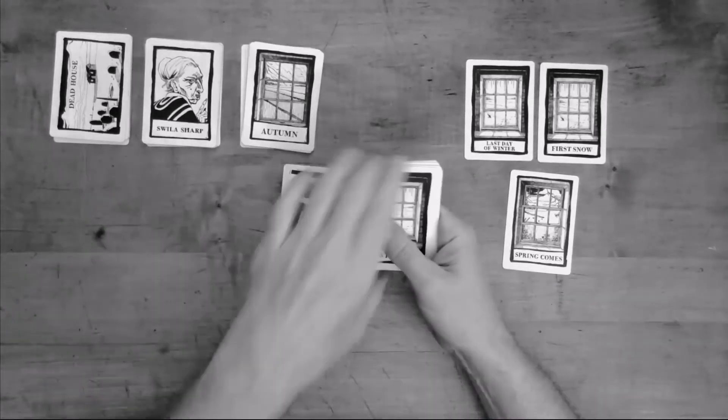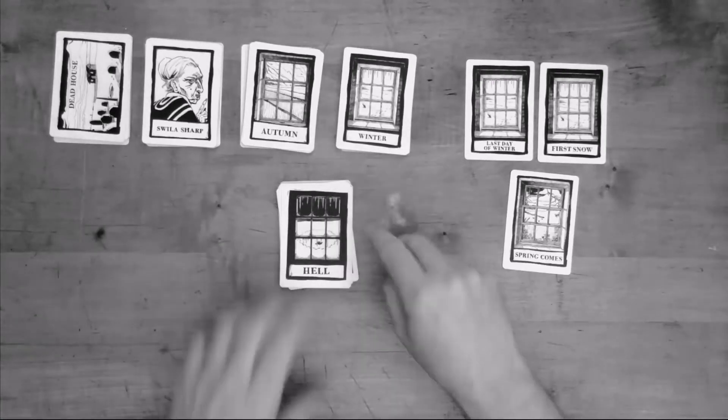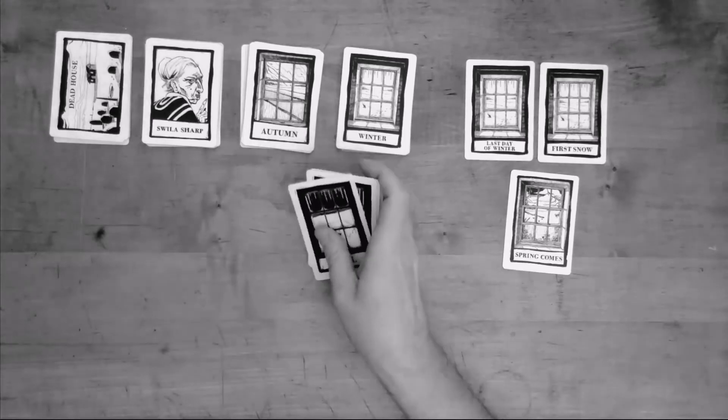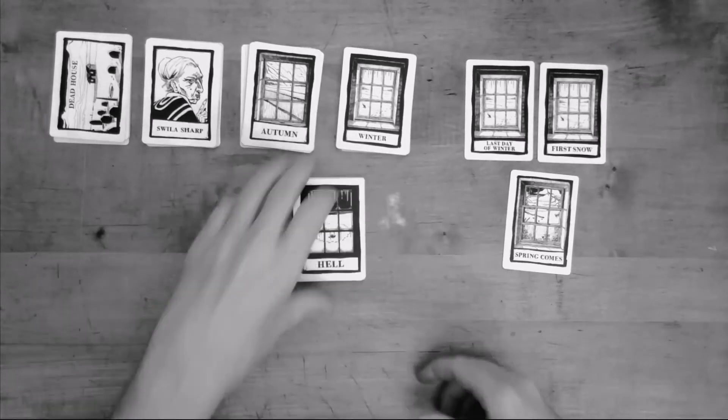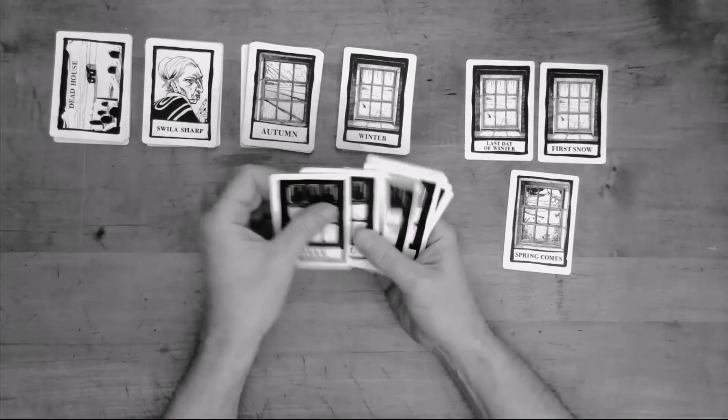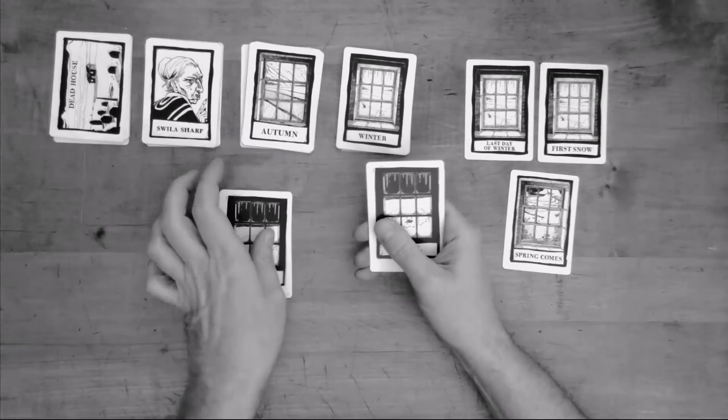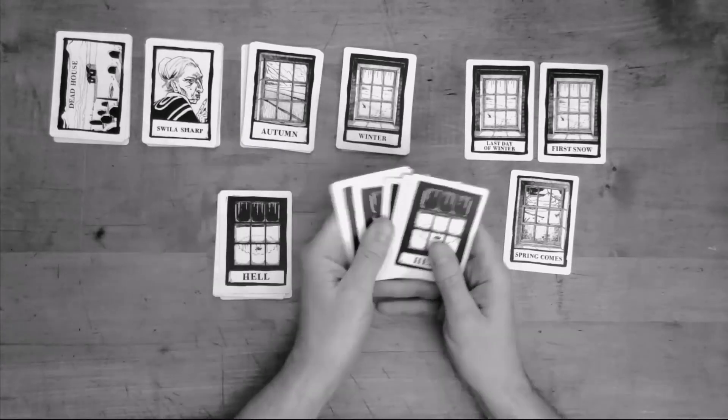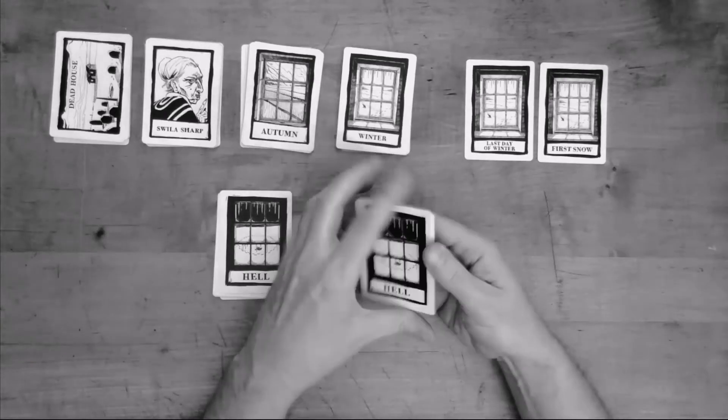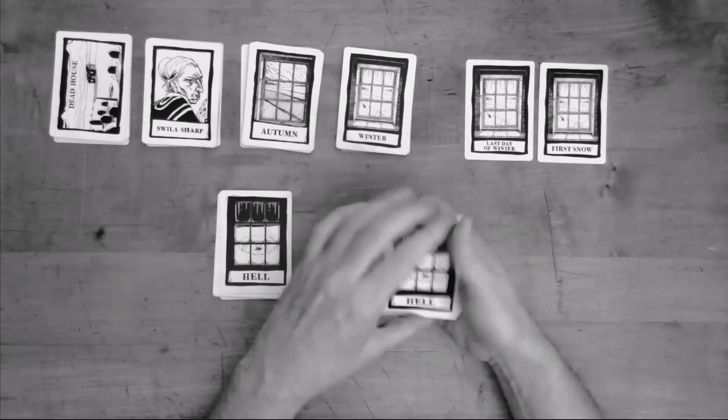Now once we've done that, we're going to take the hell deck, divide it in half, which means two sets of six cards. Put one set of six cards aside and then the others, we're going to shuffle in the spring comes card because we don't want to know exactly when spring comes. So shuffle that in there and then put that deck back together with the spring comes half on the bottom.